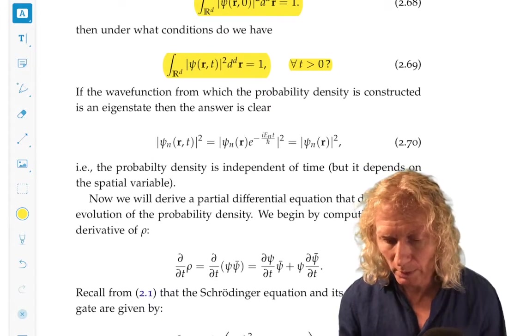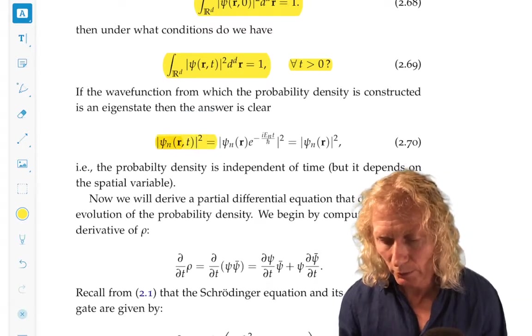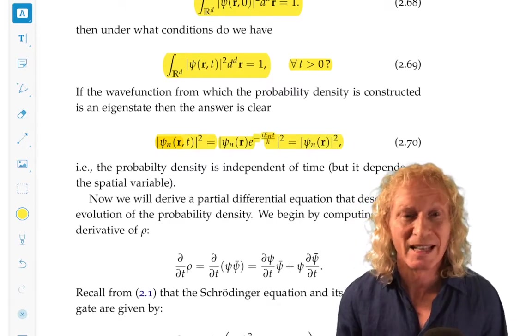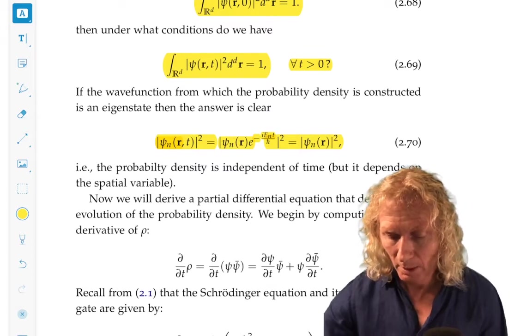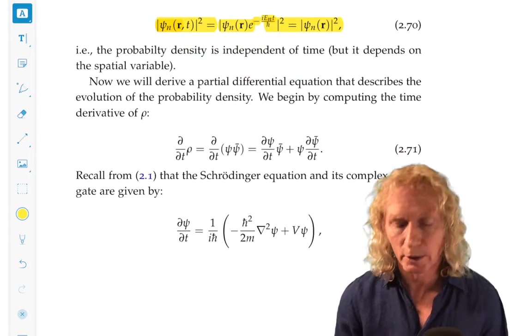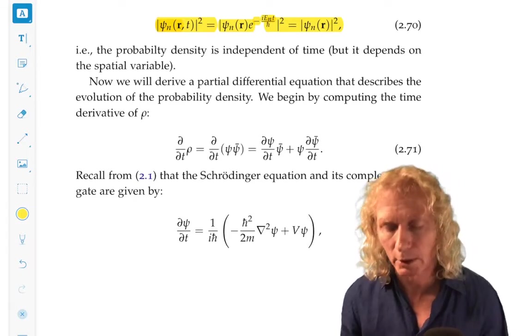So, if our wave function is an eigenfunction, we know this is true because the probability density is independent of time, but it does depend upon space. So what we're going to do is derive a partial differential equation that describes the probability density. So, how are we going to do that?